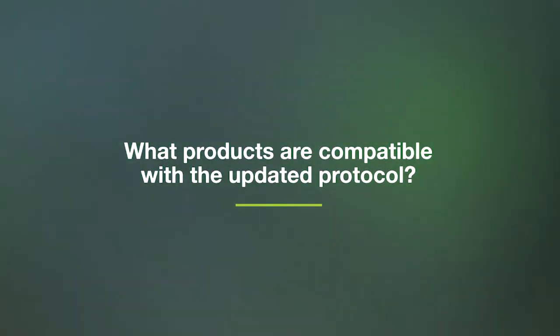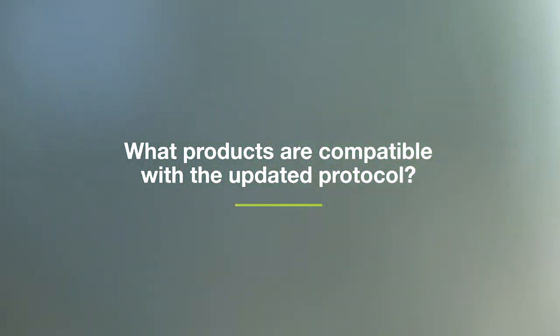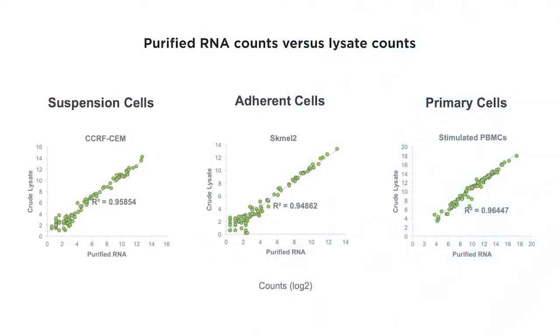Previously we had only looked at a few cell lines. The second aspect of this assay is that we had to develop three specific protocols for three different types of cells. We have a specific protocol for suspension cell lines, a protocol for adherent cell lines, and the final protocol is for primary cells — for both human or mouse cells, or basically any primary cell type that one would find in a lab.